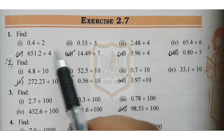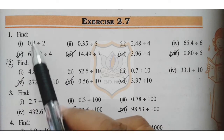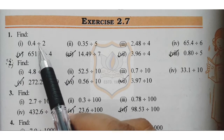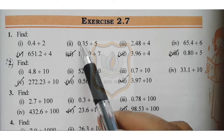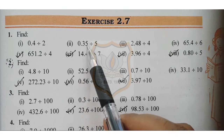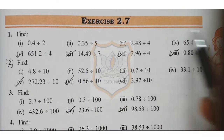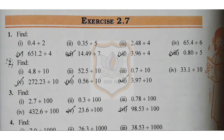Exercise 2.7, question number 1: first part is find 0.4 divided by 2, second part is 0.35 divided by 5. In all questions we have to work with decimal fractions.